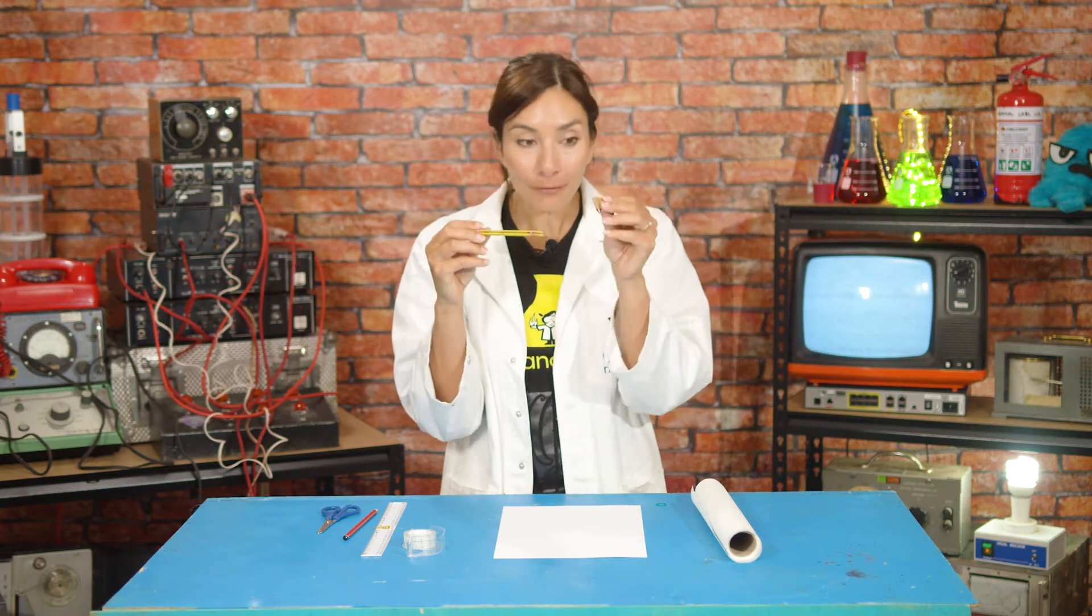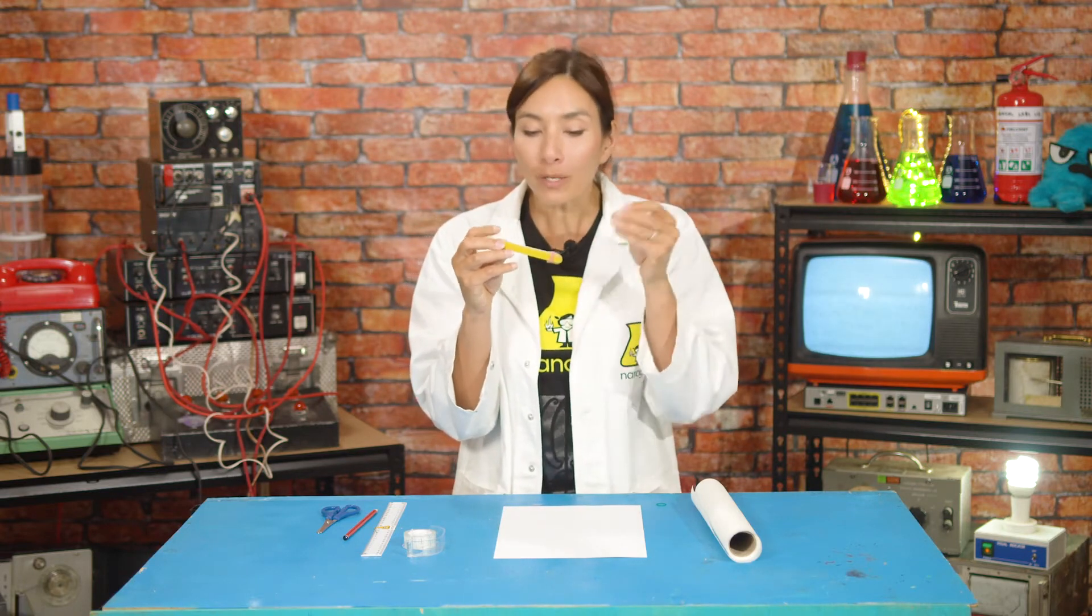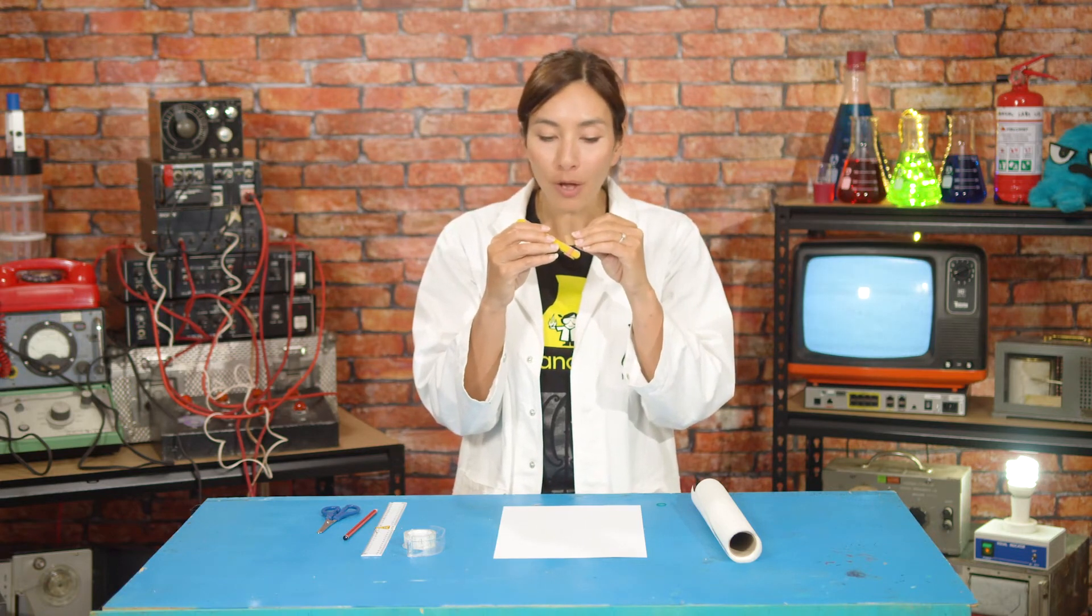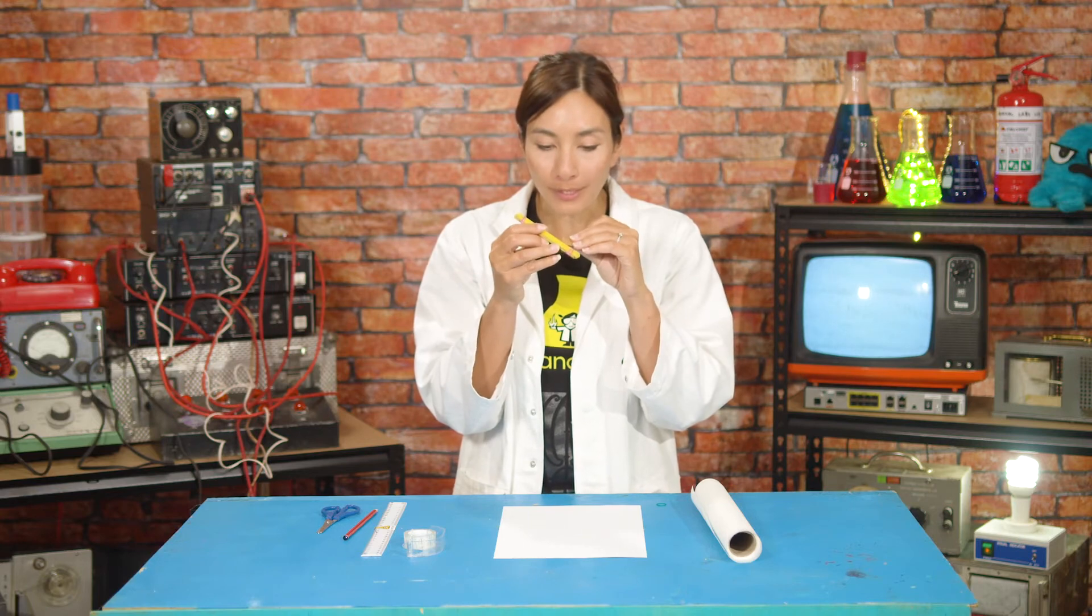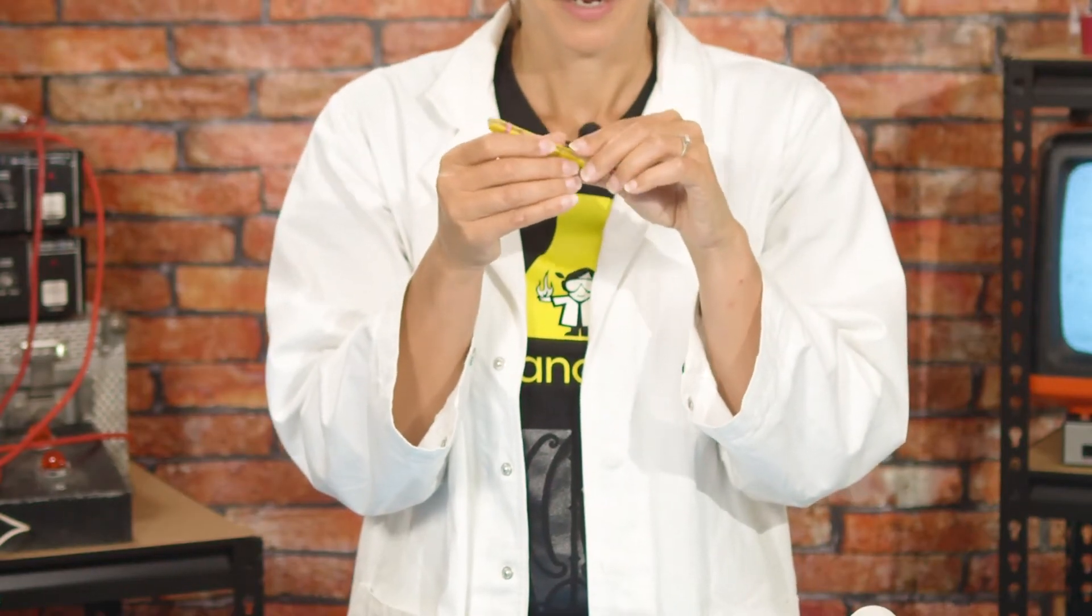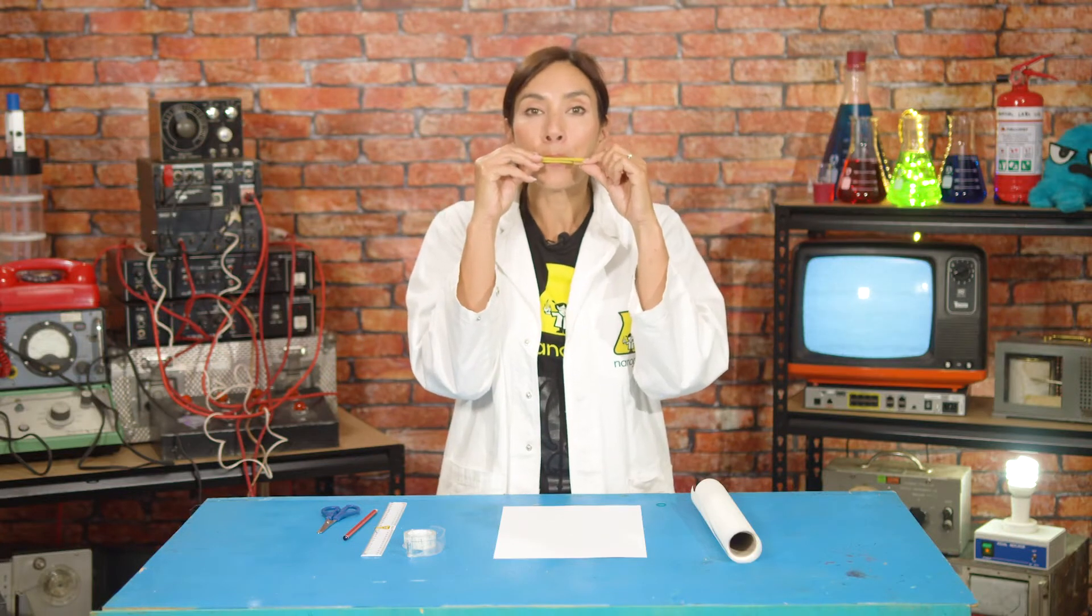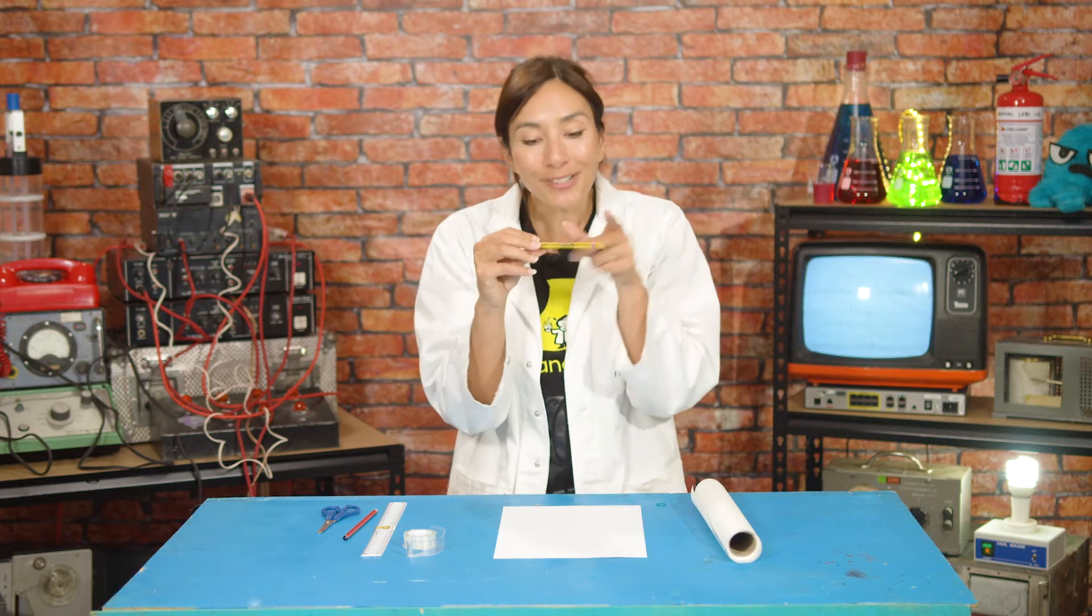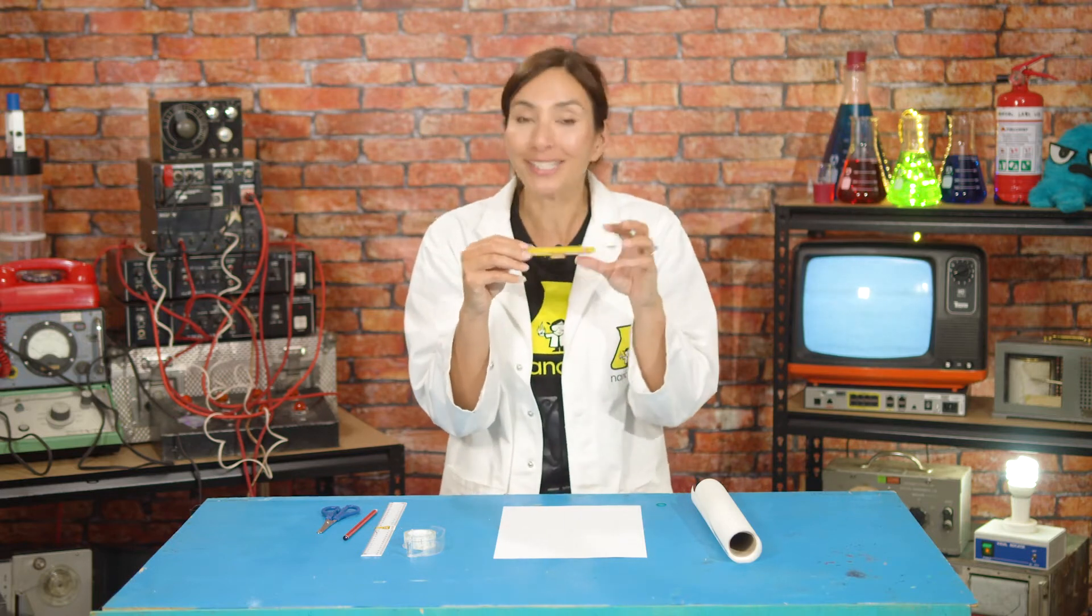Now what you can do is you can take your little bit of card, the bigger one, and if you want slide it in between here to shorten the length of your popsicle stick. And what that might be able to do is help you make a different sound. And what you can see is as you shorten it, the vibration changes and the sound changes. That's how a lot of instruments work.